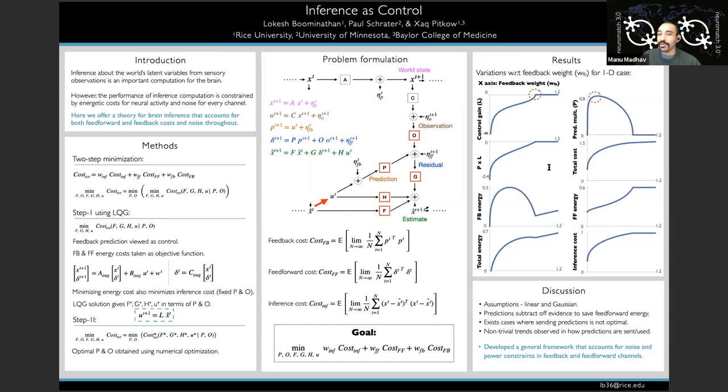And so when you're talking about a linear Gaussian state and the prediction correction framework, obviously a Kalman filter comes to mind. But in that case, in a Kalman filter framework, there's no feedback cost or feed forward cost or inference cost. That's what you're adding over here. So just like a Kalman filter, is there one closed form solution for an optimal linear estimator in this kind of framework?